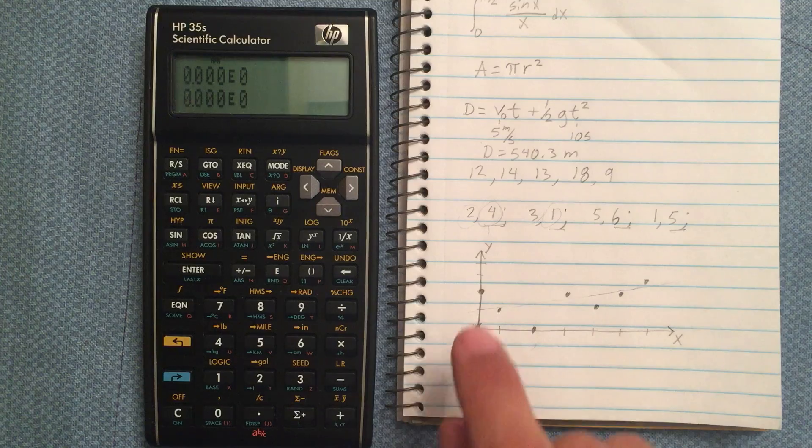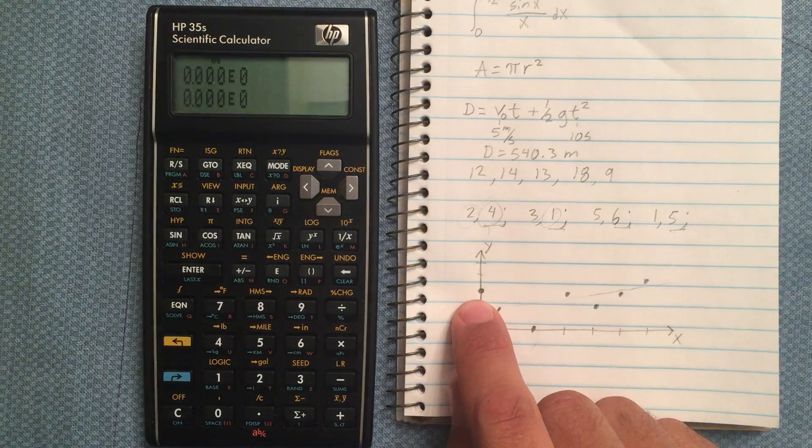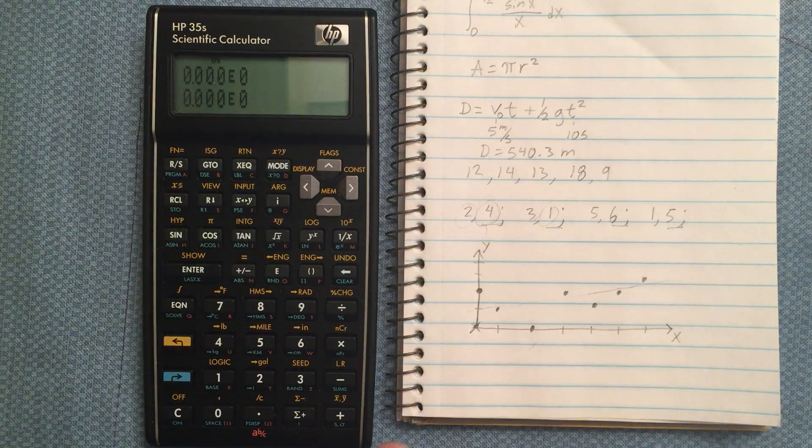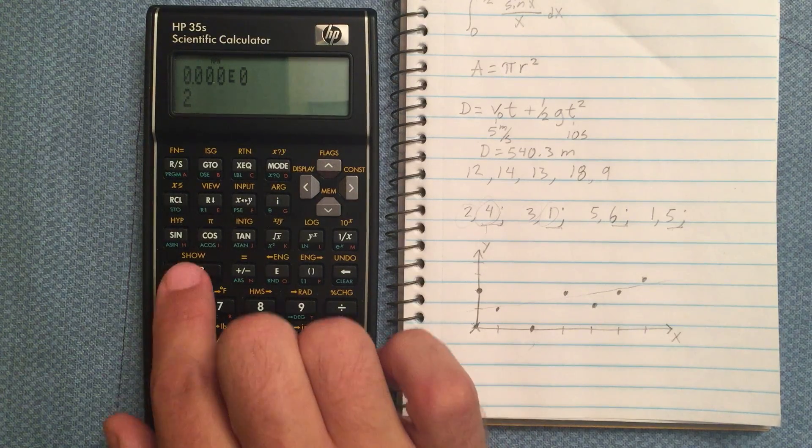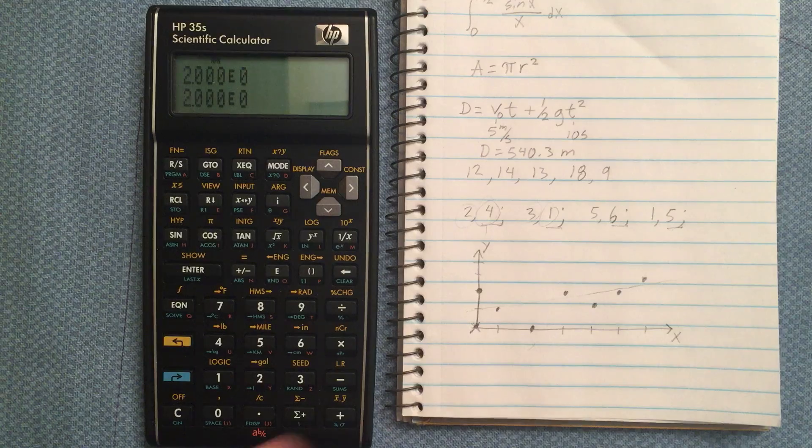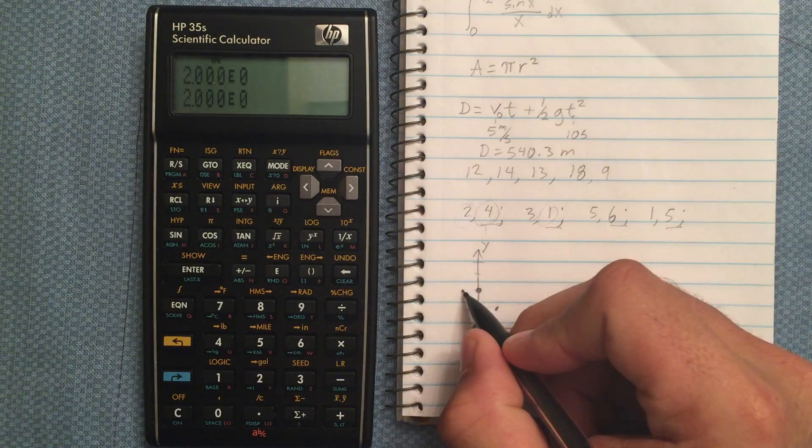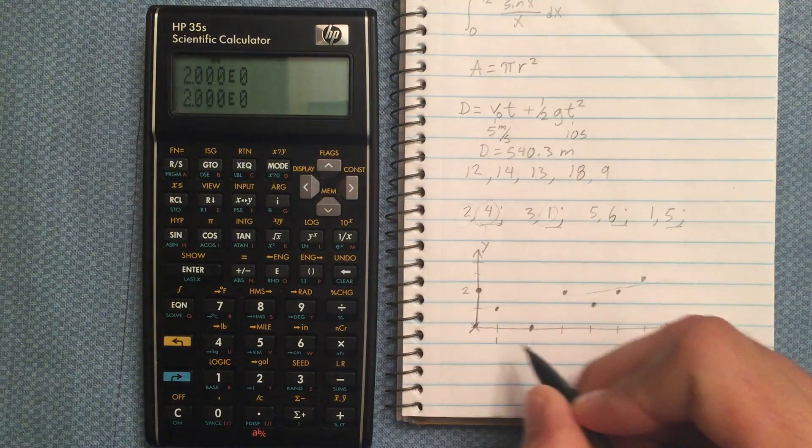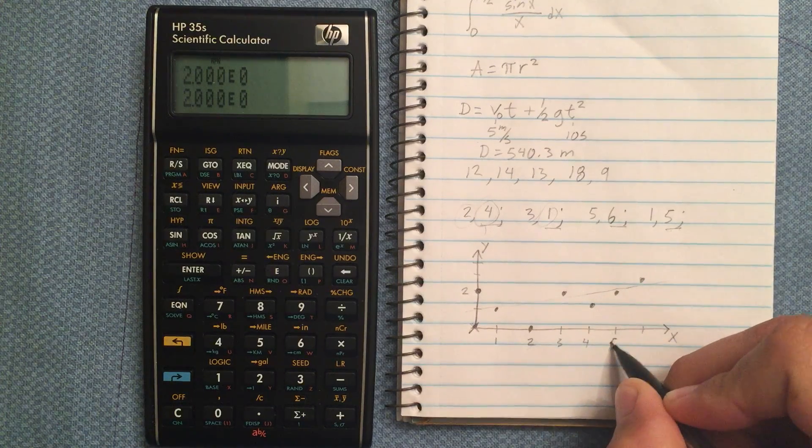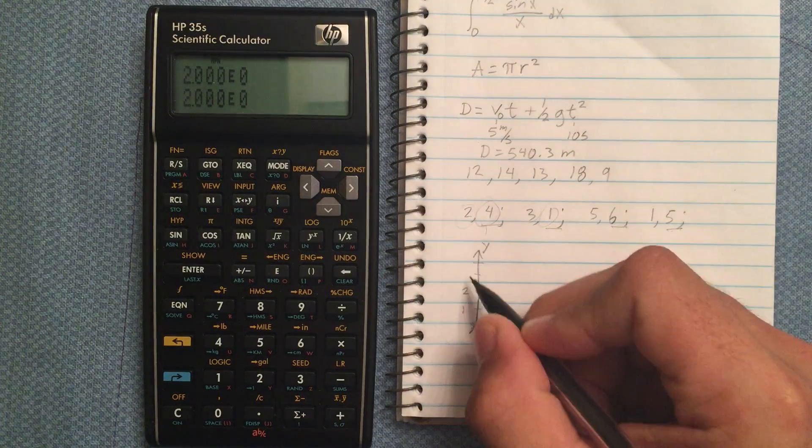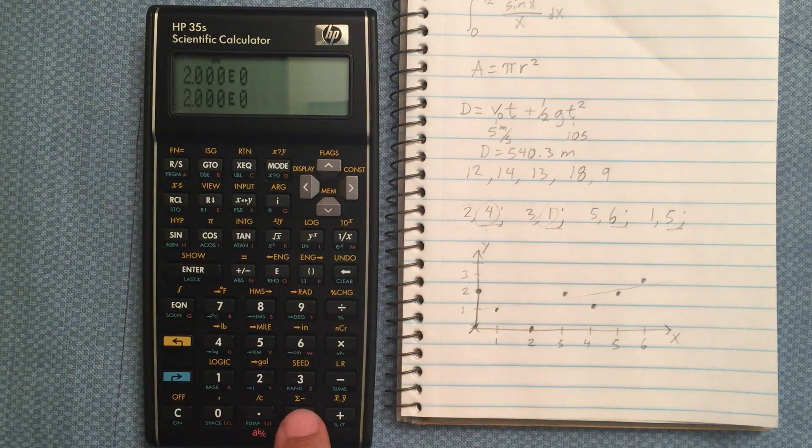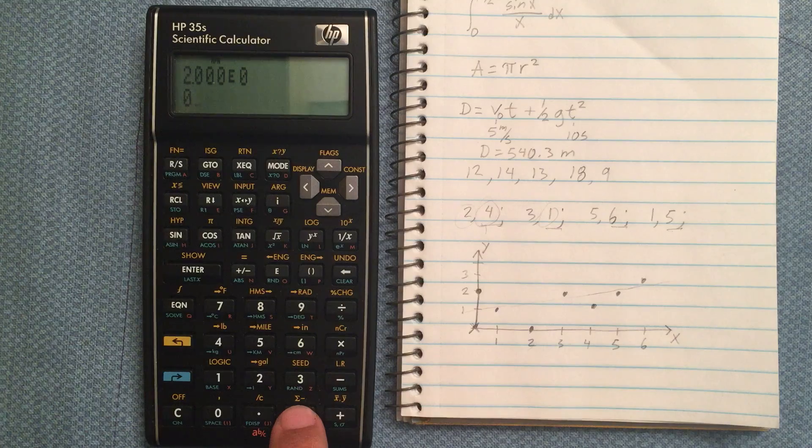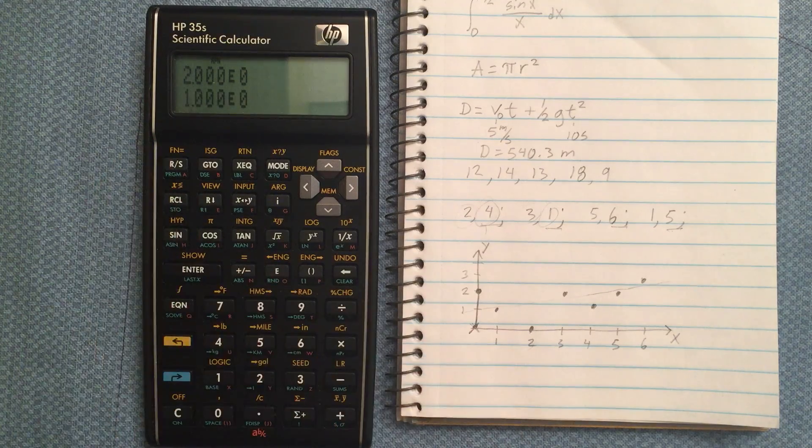So let's enter our first point. Again, we're going to enter the y value first and then the x value. So the y value is 2 and 0. Let's enter those into our sum, one item.